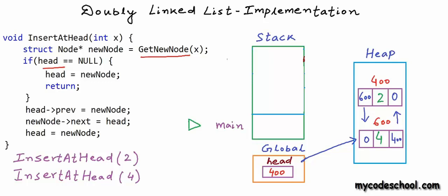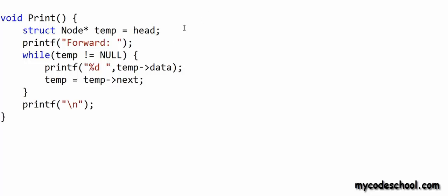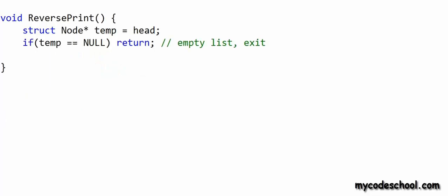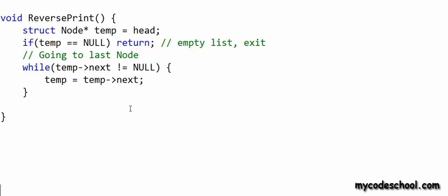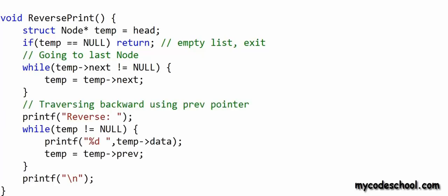The print function will work the same as for a singly linked list. We take a temporary pointer to node, initially set to head, and use temp = temp->next to advance to each node, printing as we go. In reverse print, we first traverse to the last node using the next pointer, then traverse backward using temp = temp->prev, printing data along the way.